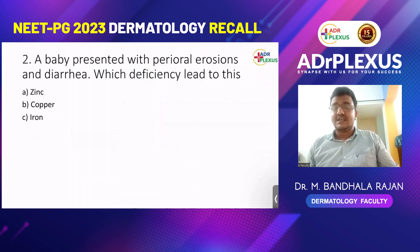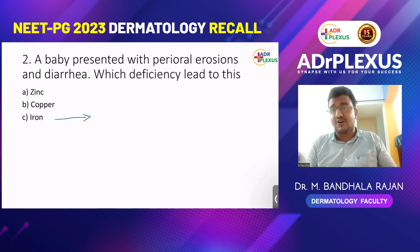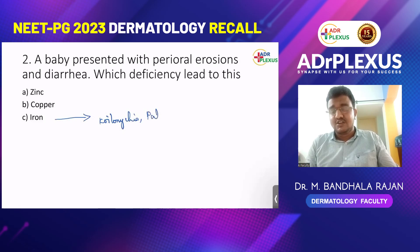Next question: a baby presented with perioral erosions and diarrhea — which deficiency leads to this? The options are zinc, copper, and iron. This is somewhat tricky. For iron deficiency, clues like koilonychia and anemia would have been given — those are not here, so iron is out. For copper deficiency, features like Wilson's disease, Menkes kinky hair disease, KF ring, and kinked hair would be present — those are also not given.